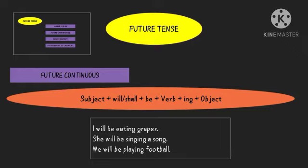Next we have future continuous tense, used to denote an action that will be continuing in the future for some time. The formula is: subject + will/shall + be + verb + ing + object. Since it is progressive, we use 'ing'. For example: I will be eating grapes, she will be singing a song, we will be playing football.